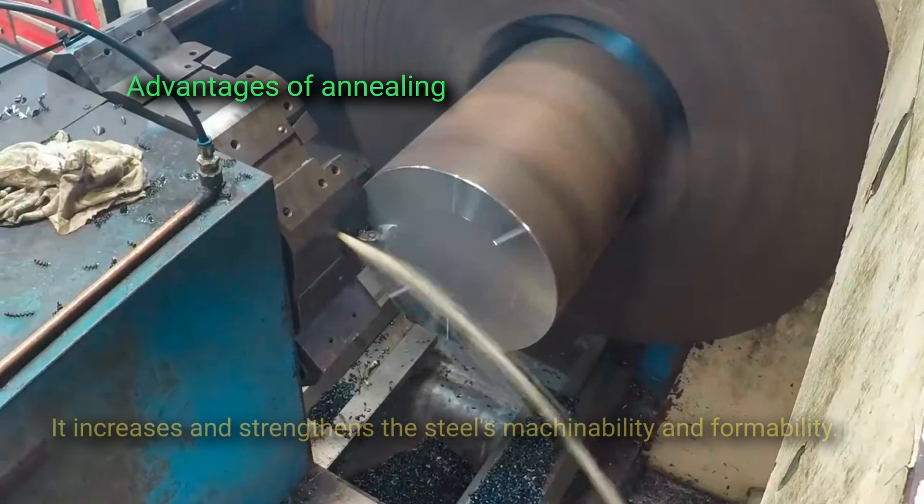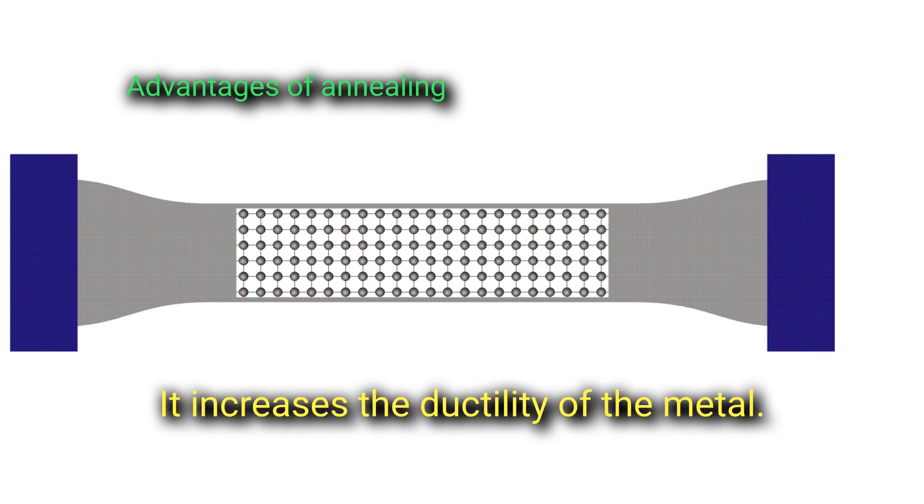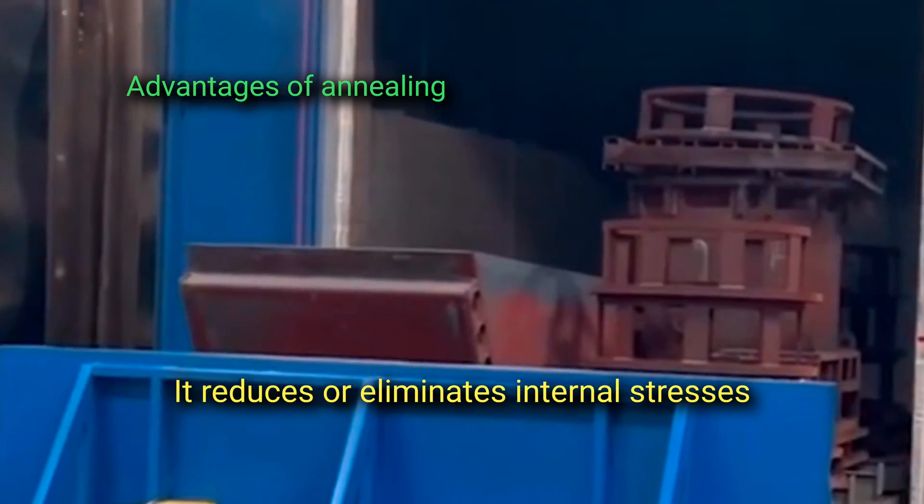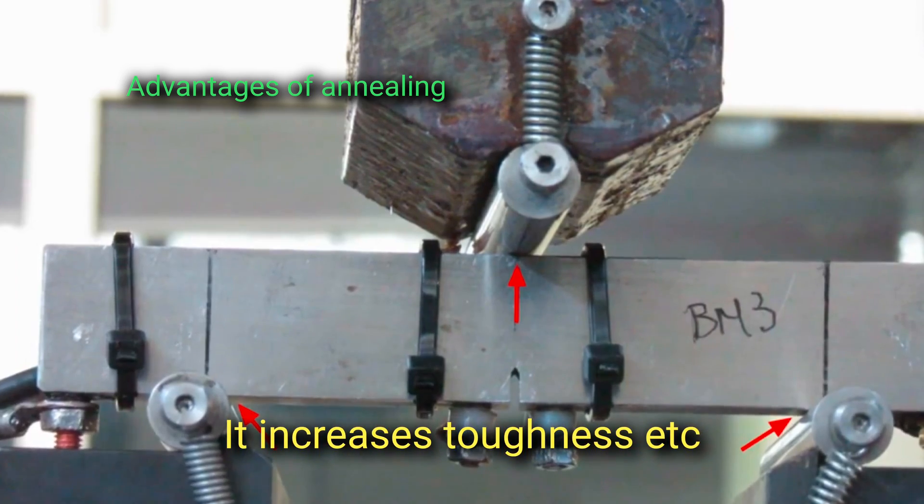Advantages of annealing. It increases and strengthens the steel's machinability and formability. It increases the ductility of the metal. It reduces or eliminates internal stresses. It enhances the metal's uniformity. It increases toughness.